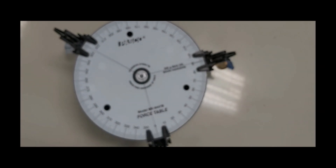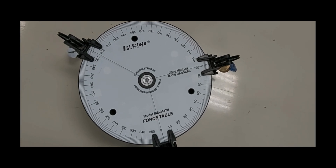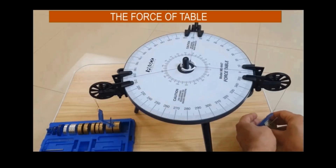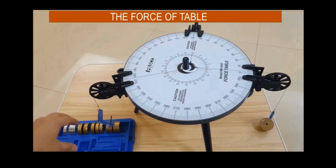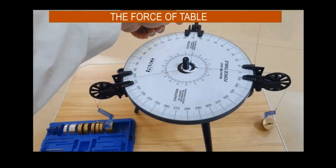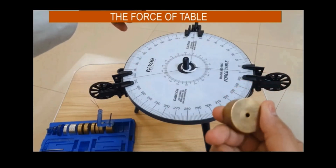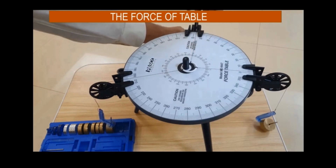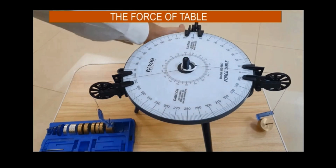On separate graphing paper, add the three vectors graphically as explained in the theory part. Measure the length of the net vector using a ruler and its direction angle using a protractor. When one Newton force is applied on a pulley, two forces also act. We have two forces pulling the ring, so we need to bring the ring to the center equilibrium position by applying forces on a third pulley to balance these two forces.